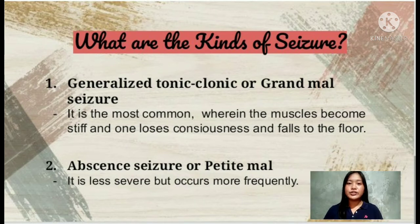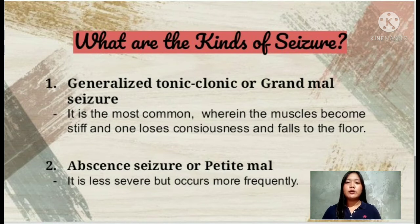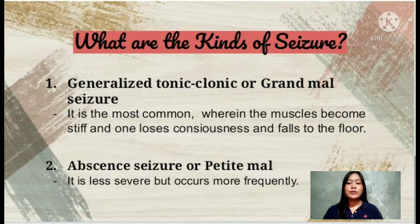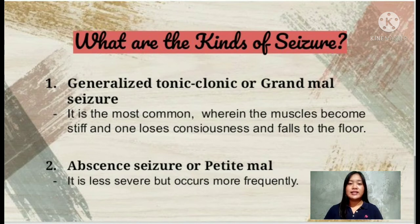The second kind of seizure is the absence seizure, also known as petit mal. It is less severe but occurs more frequently. It involves a brief loss of consciousness lasting from a few seconds to half a minute. The person may stare blankly, flutter or blink, grow pale, and drop whatever he or she is holding, as if daydreaming or not listening. The person may be unaware of the seizure.